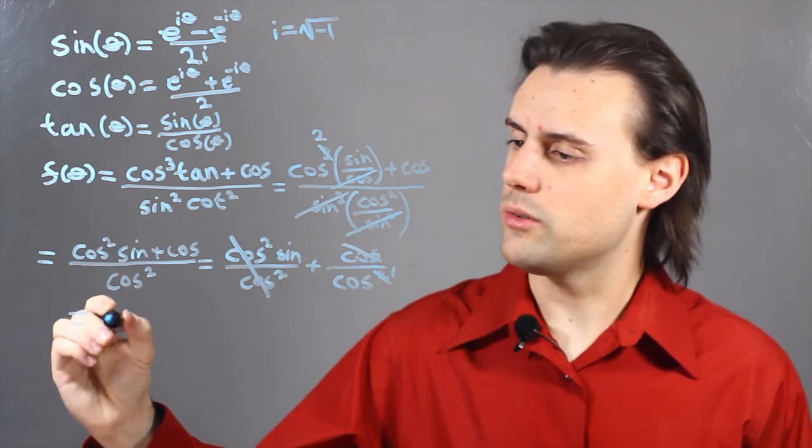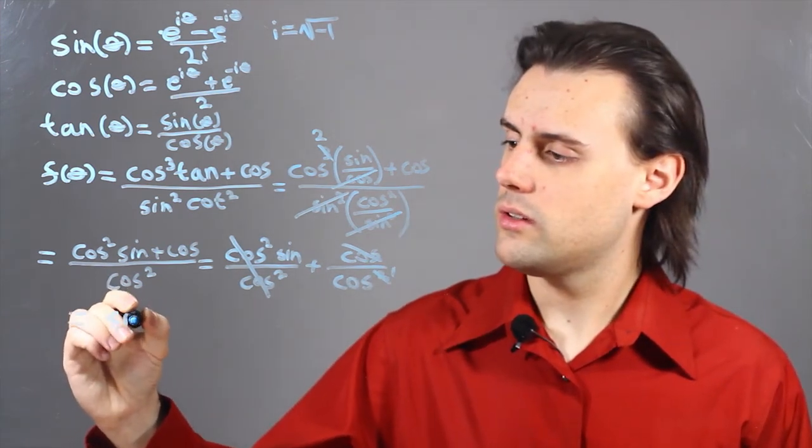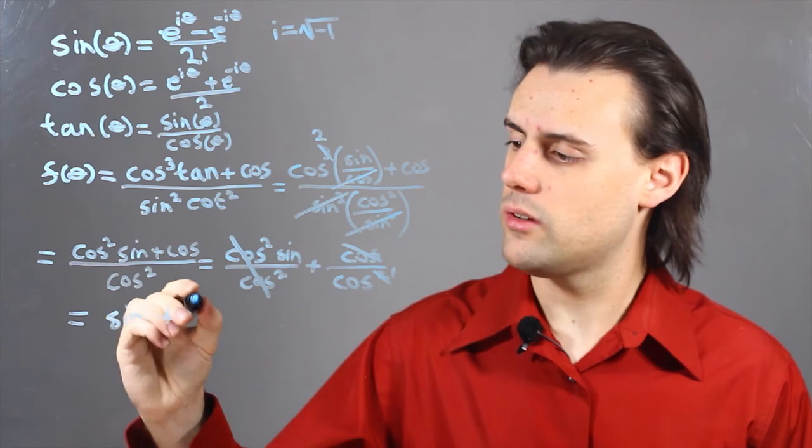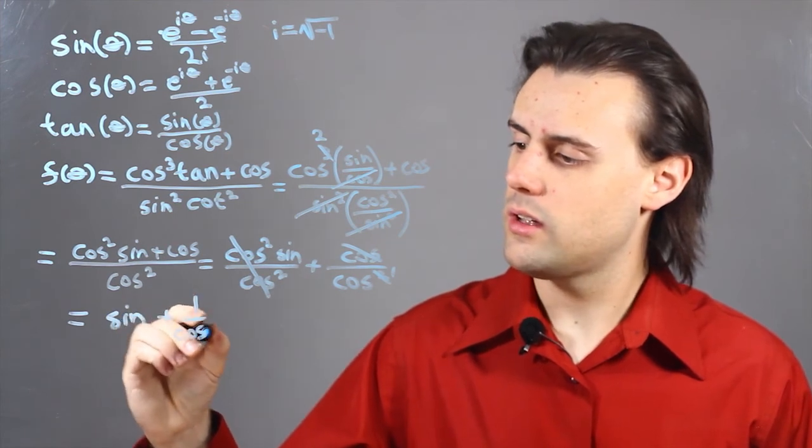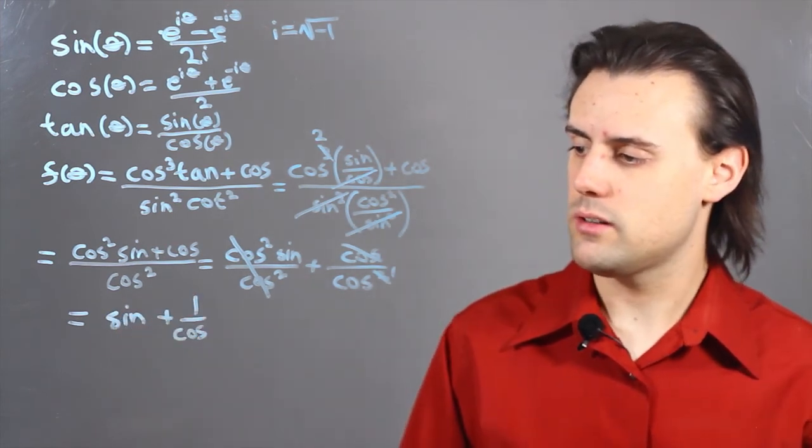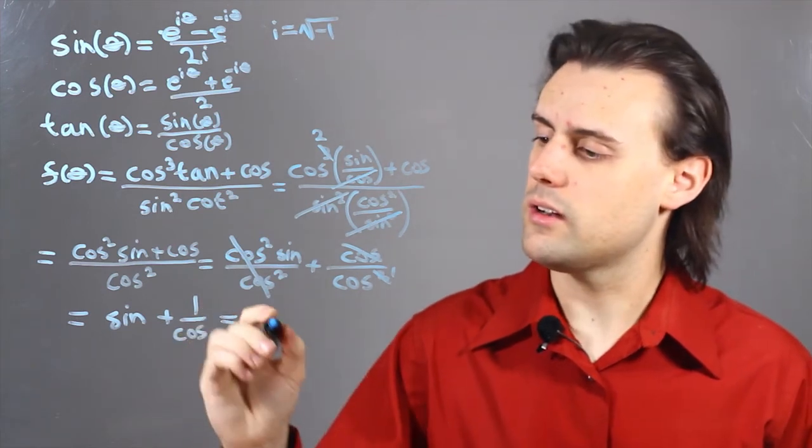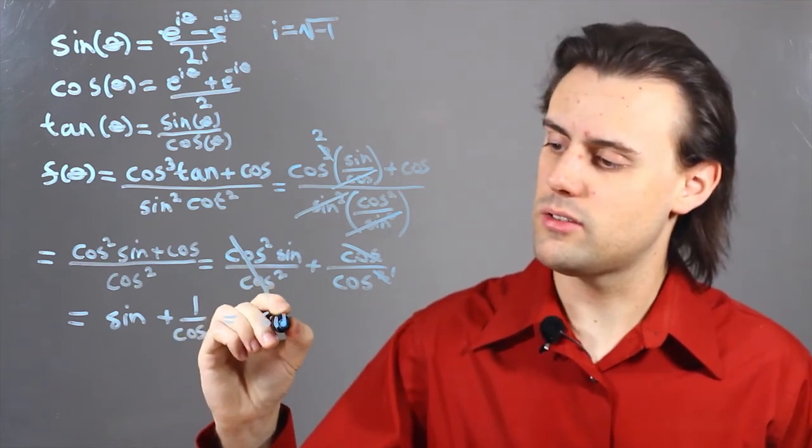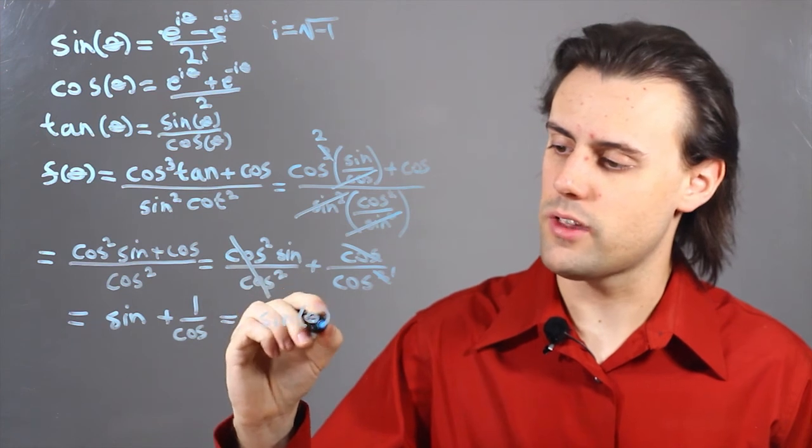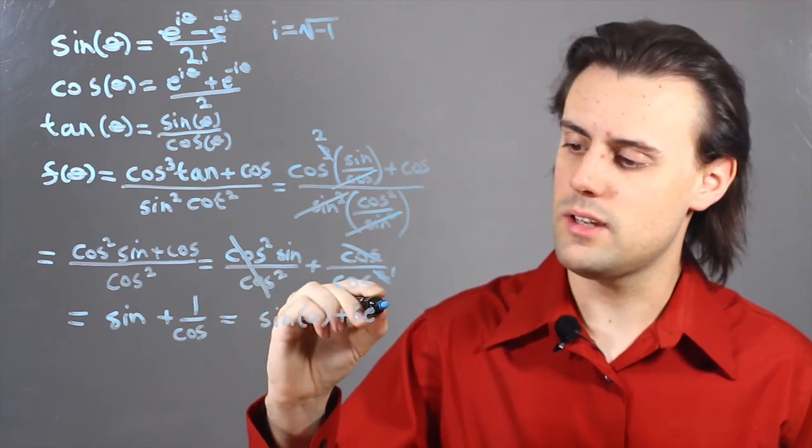This is equal to sine plus 1 over cosine, and 1 over cosine is equal to secant. So I can write this in a slightly simpler form as sine of theta plus secant of theta.